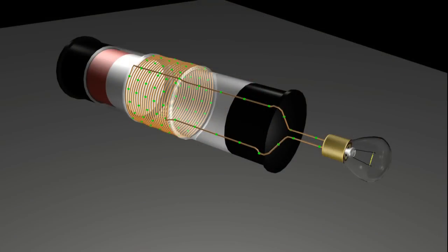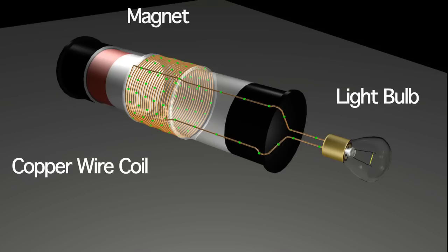Now, let's take a closer look and see what's really going on inside. We are looking at the inner workings of our flashlight. You can see the copper wire coil, the magnet, and the light bulb.